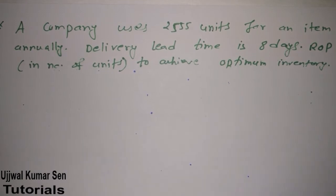A company uses 2555 units for an item annually. Delivery lead time is 8 days. We have to find out ROP - the reorder point.